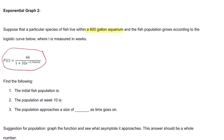They want to know what the initial population is, so let's do that. P of 0 at 0 time, we have 66 over 1 plus 32 times e to essentially 0, 0, and that's 66 over 33, right? 32 times 1 is 32 plus 1 is 33, and that's 2. So there were two fish at the beginning.